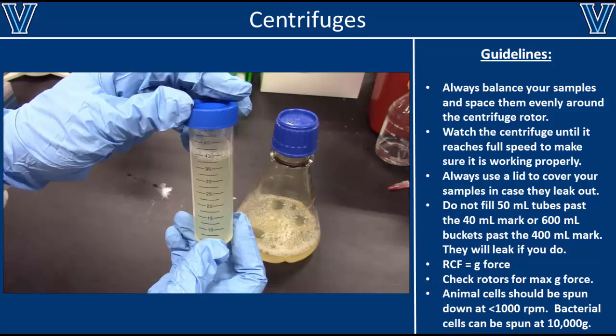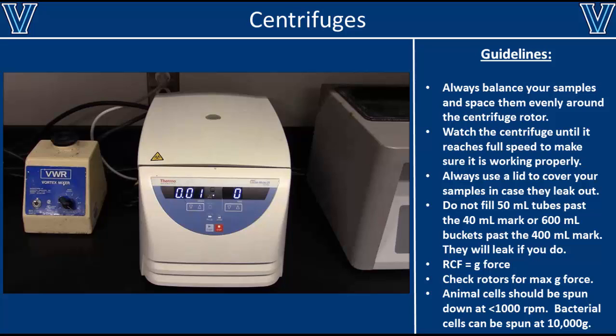So to prevent making a huge mess that you have to clean up in the centrifuge, only fill up 50 ml tubes to 40 ml and fill 600 ml buckets to around 400 ml. So just to review, when using a centrifuge, always make sure that your samples are properly balanced. When using 50 ml tubes or large buckets, only fill them to 80% of their maximum volume to prevent any spills. If a spill does occur, make sure that you clean it up immediately.